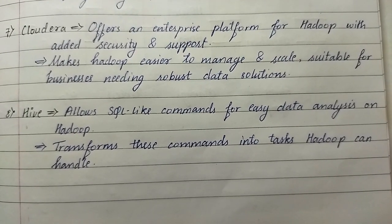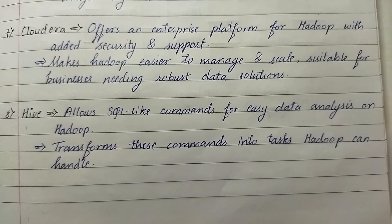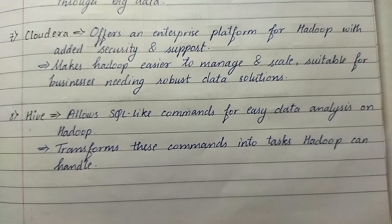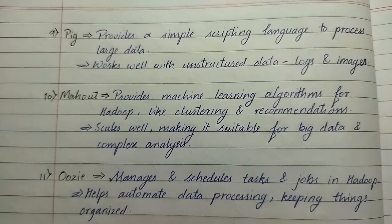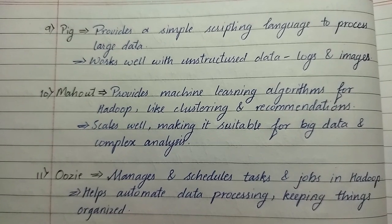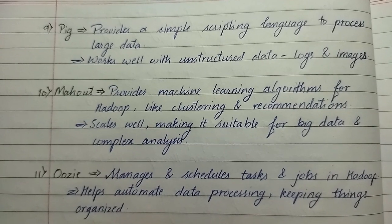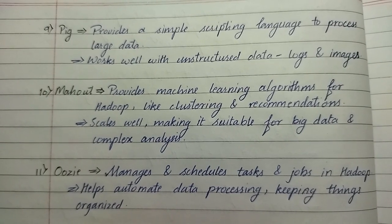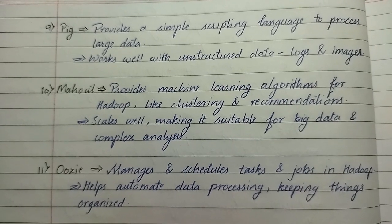Eighth is Hive. It allows SQL-like commands for easy data analysis in Hadoop and transforms these commands into tasks Hadoop can handle. Ninth is Pig. It provides a simple scripting language to process large data and works well with unstructured data like logs and images. Tenth is Mahout. It provides machine learning algorithms for Hadoop like clustering and recommendations, and scales well, making it suitable for big data and complex analysis.